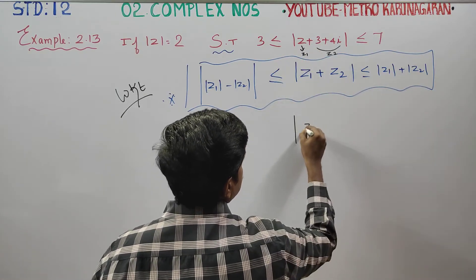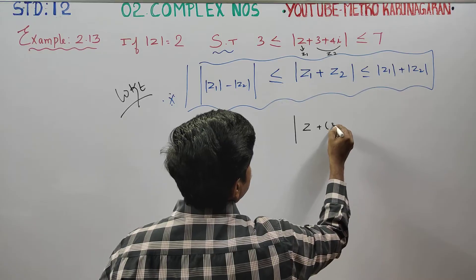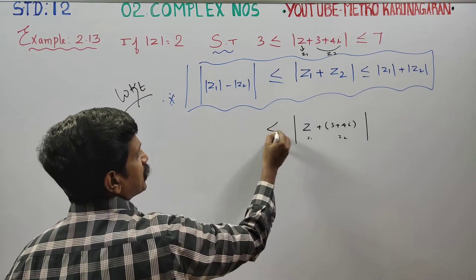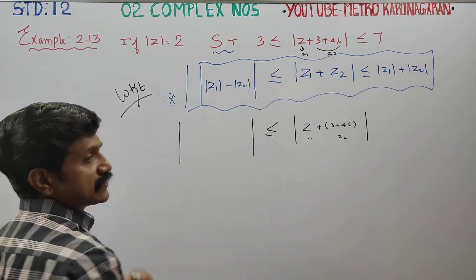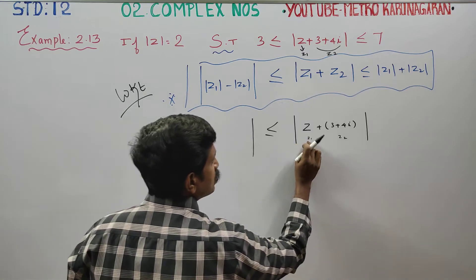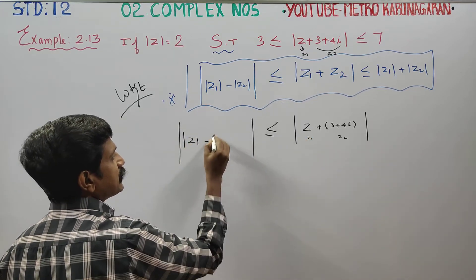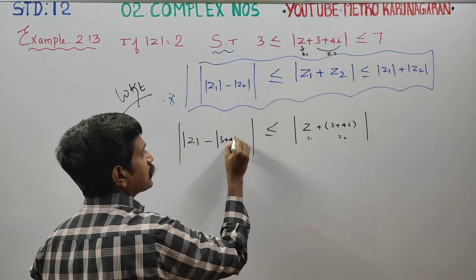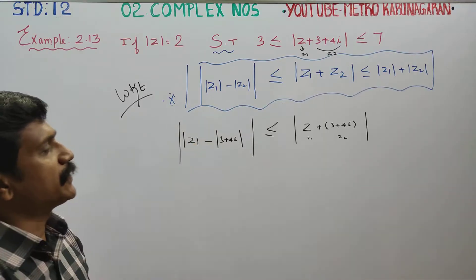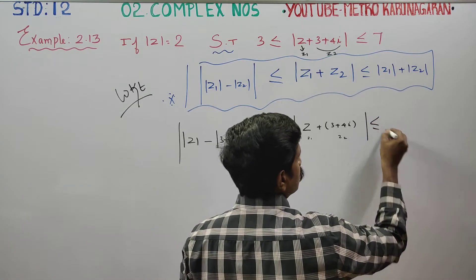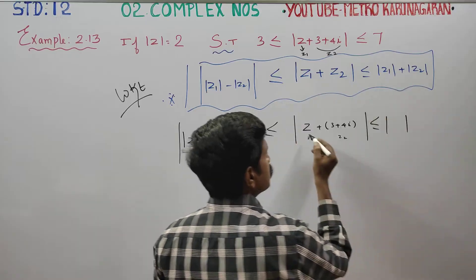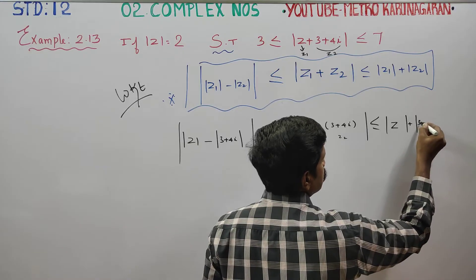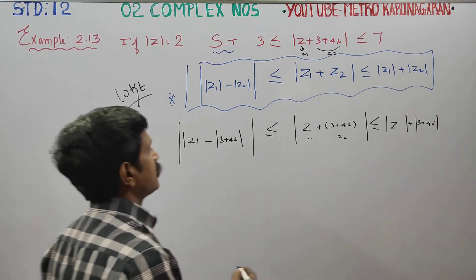Z1 is z plus 3 plus 4i. This is my z1 and this is my z2, less than or equal to modulus of z1, which is z, minus modulus of z2, which is 3 plus 4i, less than or equal to modulus of z1, z, plus z2, 3 plus 4i.